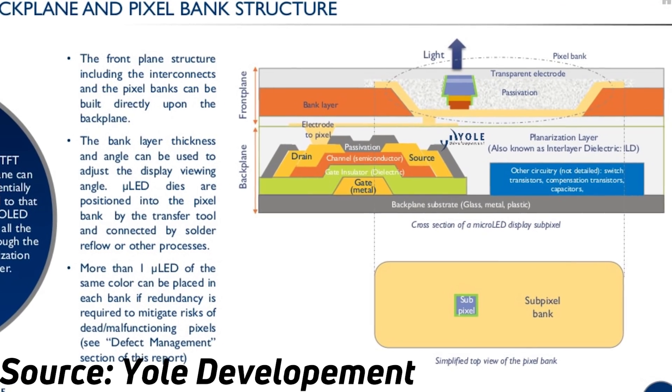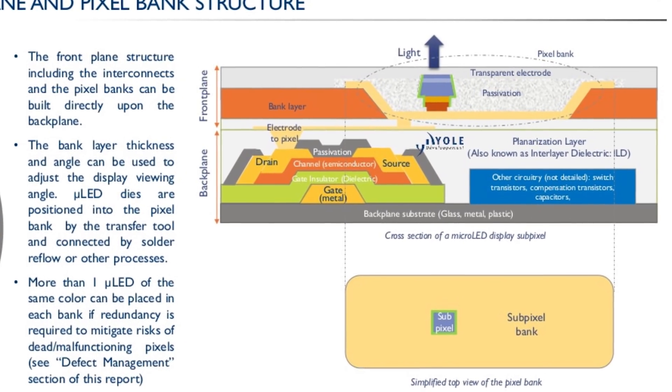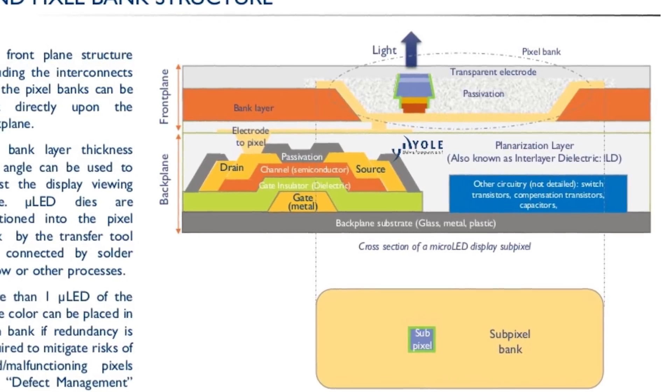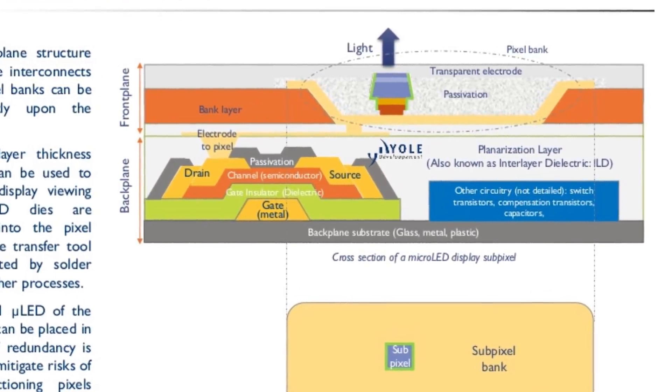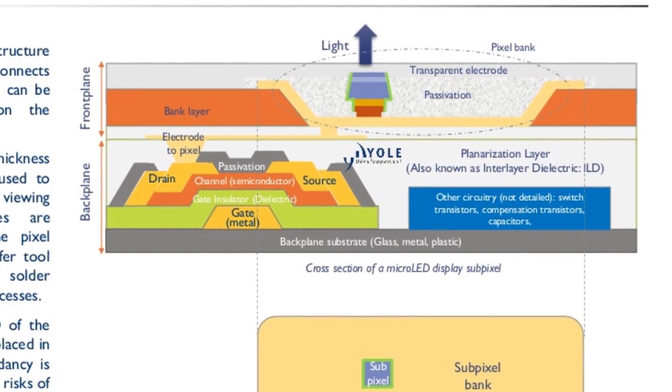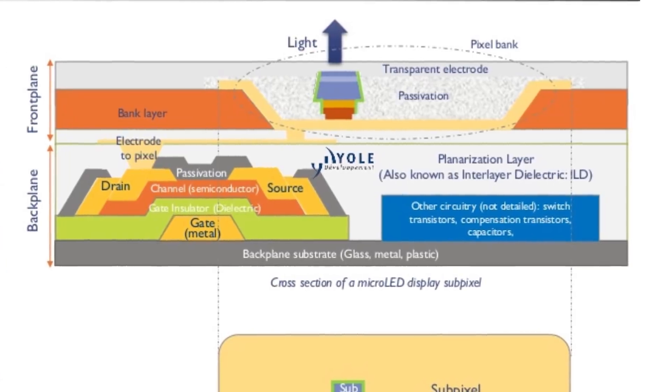Micro LED technology has several advantages over current OLED technologies. The displays can actually be thinner because you no longer need a polarizing and encapsulation layer — layers found in OLED display manufacturing. But it's more than just thinner: because of the inorganic compound used, less power is needed. Some estimates say a micro LED display uses 90% less power than an LCD display and up to 50% less power than an OLED display — significant power reductions.